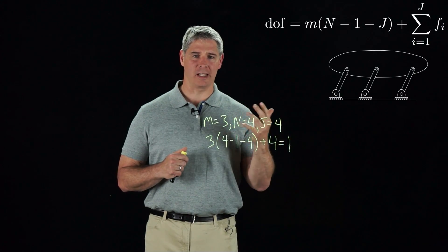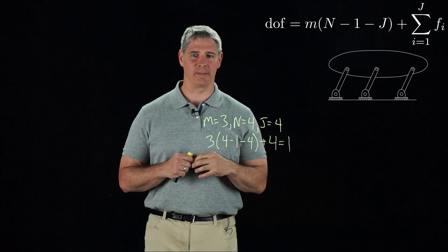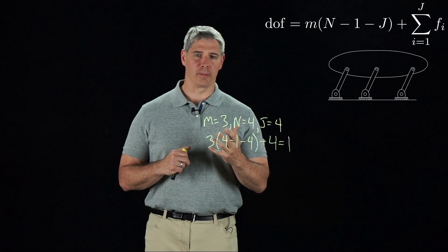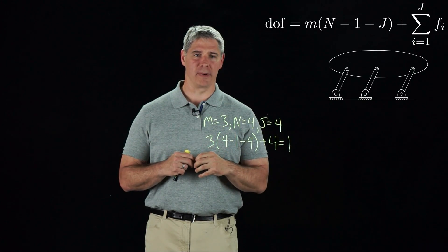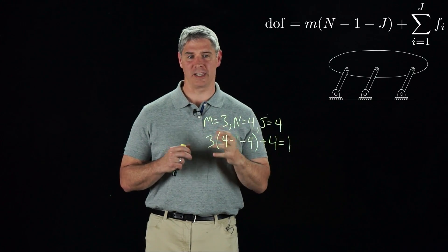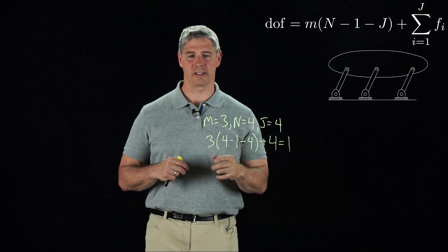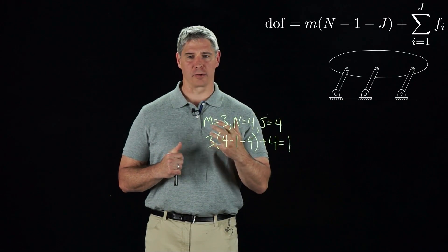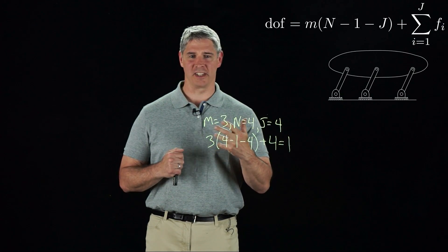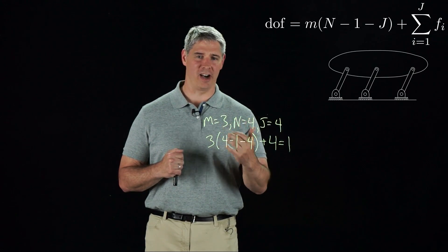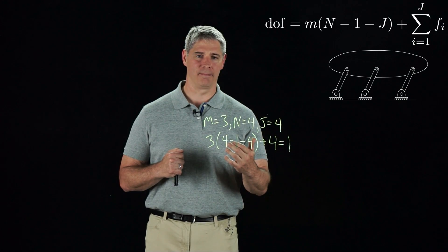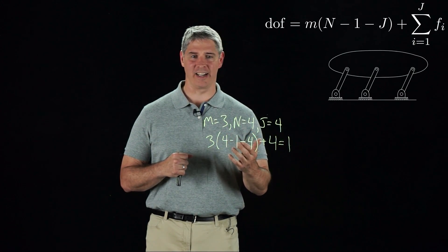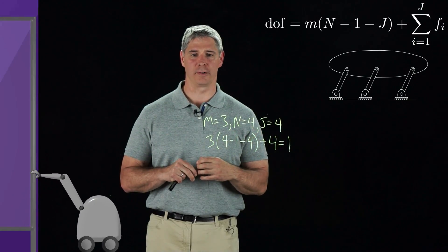The next mechanism is like the four-bar, except it adds one more link and two more joints. Grubler's formula would tell us that this mechanism has zero degrees of freedom, but that's wrong — it still has one degree of freedom, just like the four-bar. The reason Grubler's formula does not apply is that the joint constraints are not independent. Testing whether joint constraints are independent is not an easy task, and we won't pursue it further.